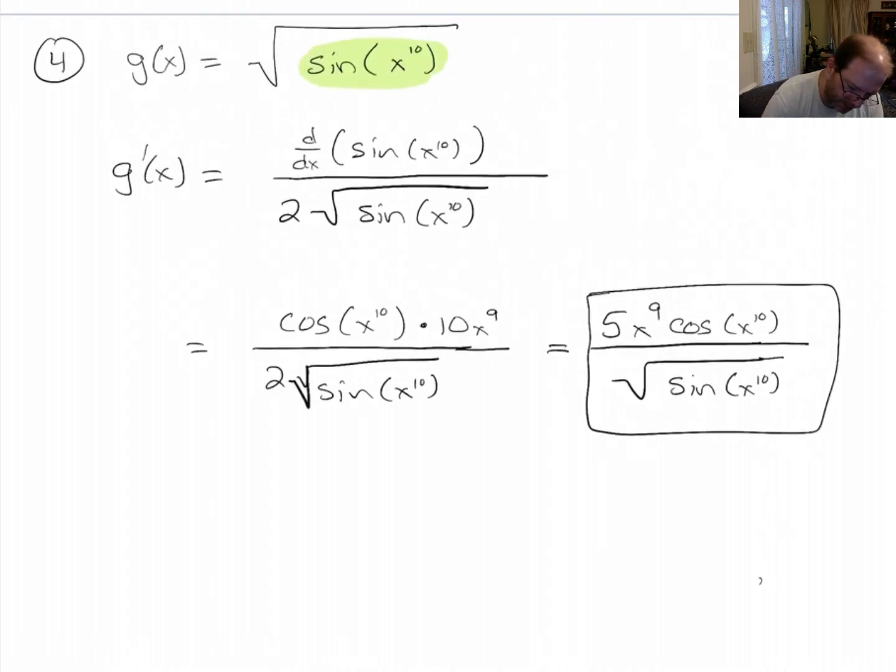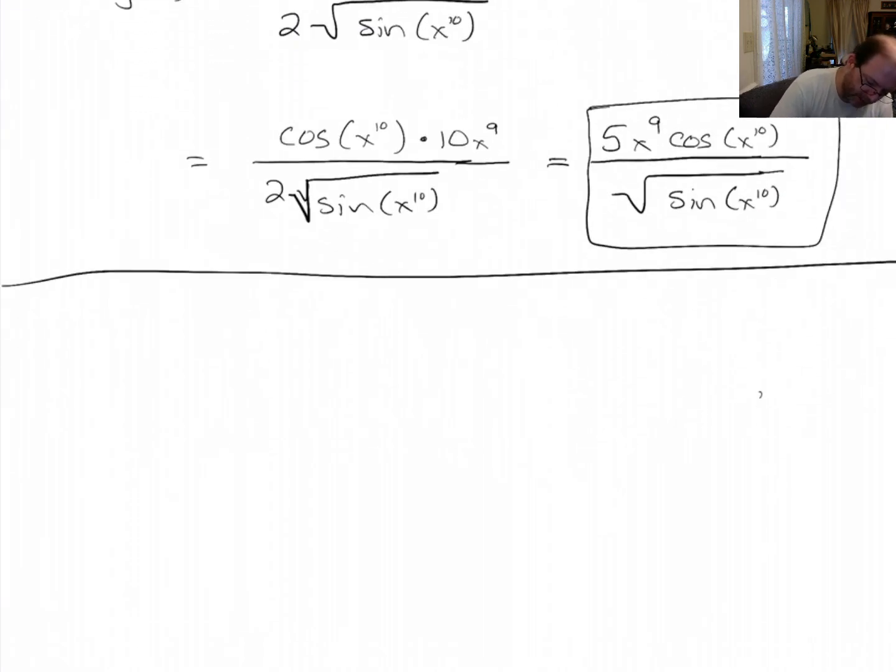Alright, let's do one more example. Let's do one that's slightly nicer. Find the derivative of, I'm going to use this notation just for a change. Find the derivative of square root of x to the 5th plus 5x plus e to the x.